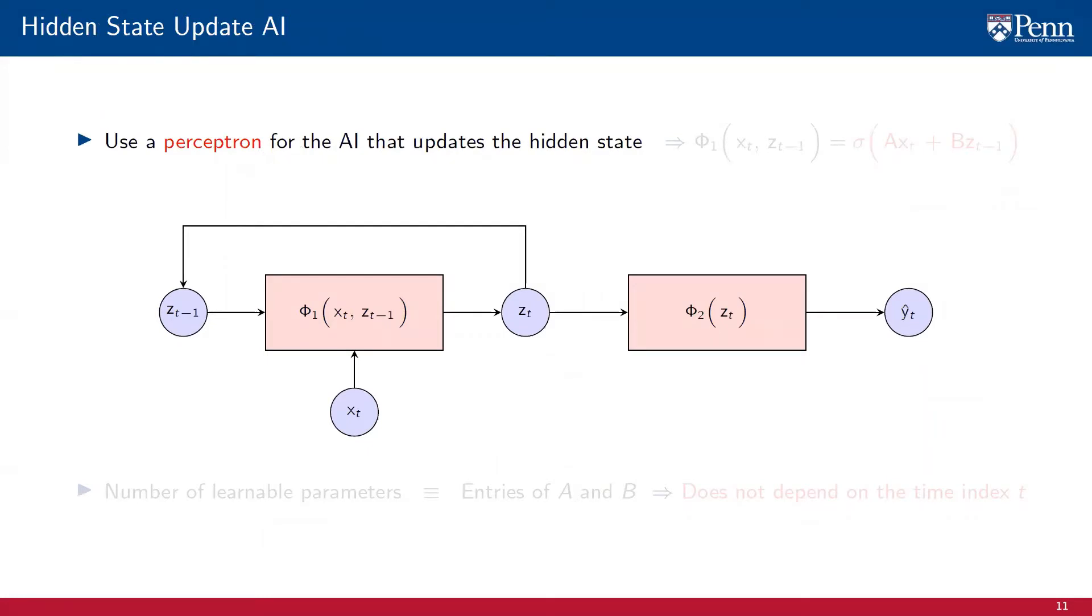So far, we haven't said anything about the specifics of the parametrizations phi1 and phi2. They could be anything, but in a recurrent neural network, they are neural networks. More concretely, the AI for the hidden state update is a perceptron.